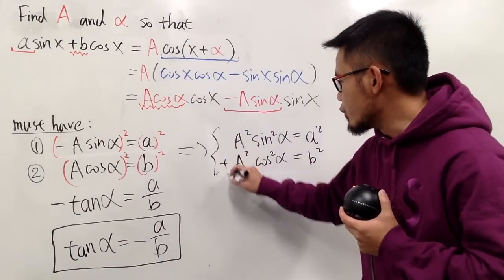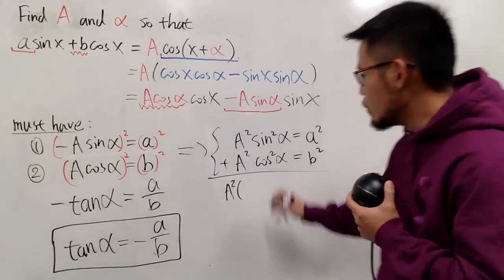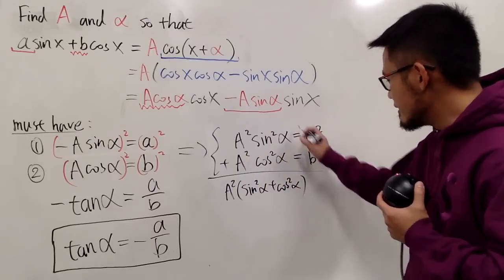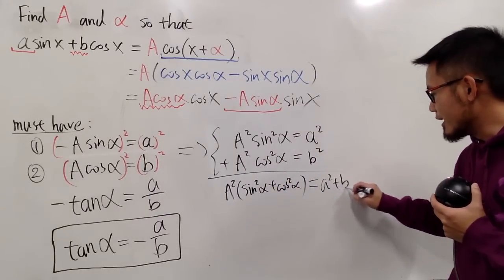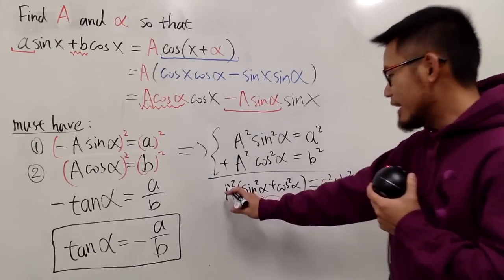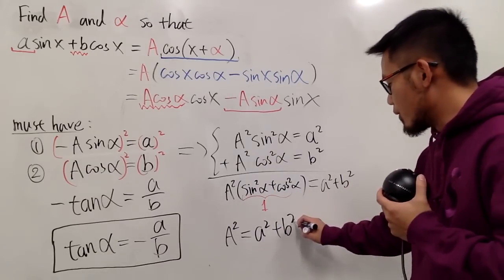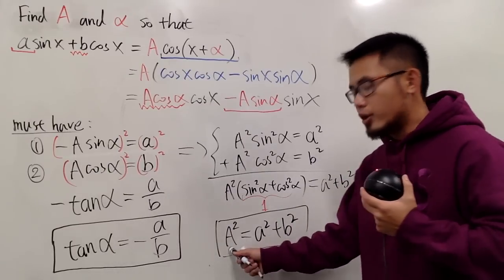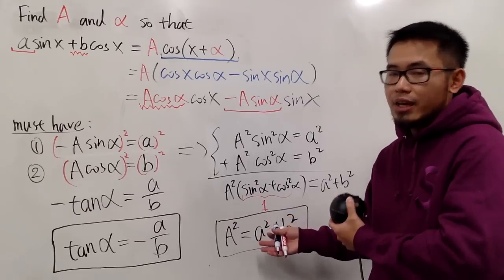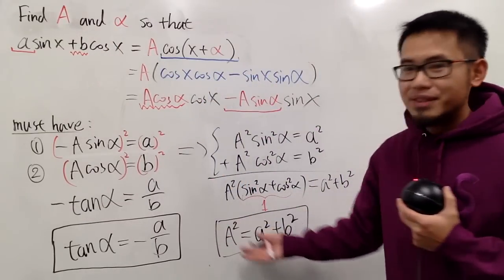And now, we are going to just add these two equations together, and notice that this and that, they both have A square. So I can factor that out, and then we were left with sine square alpha plus cosine square alpha, and this is equal to little a square plus little b square on the right-hand side. And now, what is this? This is nicely equal to 1. So, in the end, we see we will have A square equal to a square plus b square. So, this is the condition on the capital A. And I'm not going to isolate the capital A for you guys, neither, because you may have plus A or negative A, and as I said, you may have a different combination of capital A and alpha to make this work. So, I will just leave this for you guys.